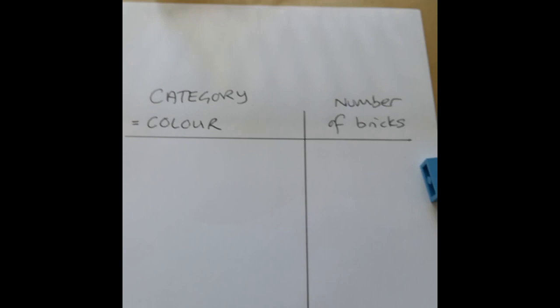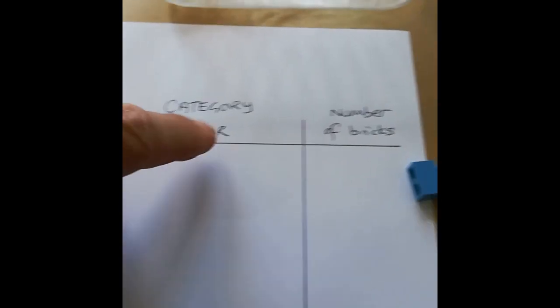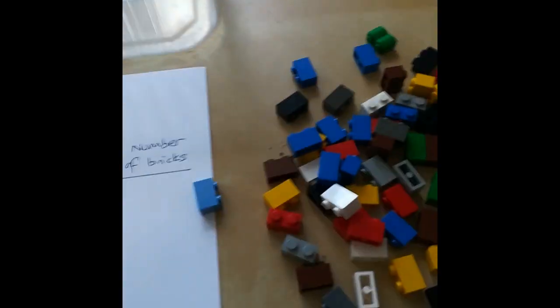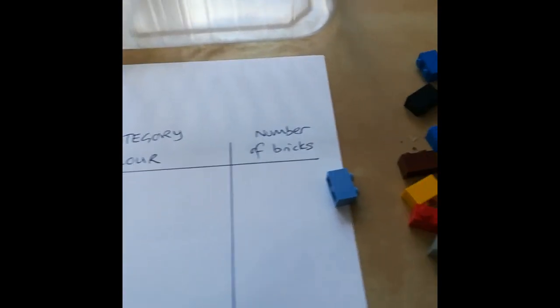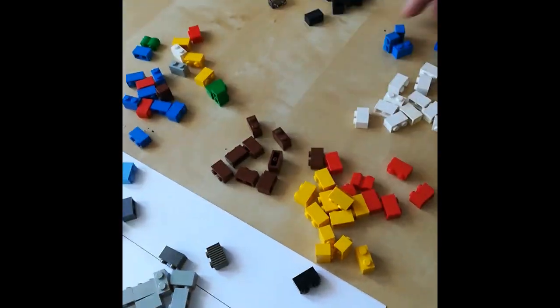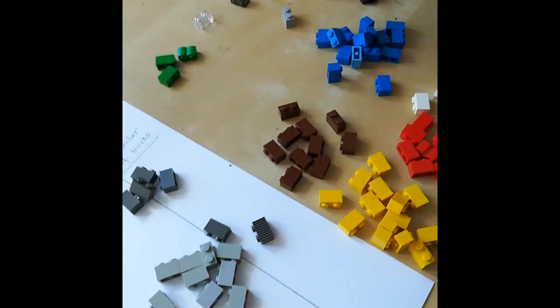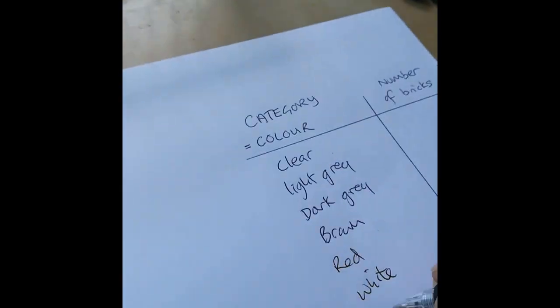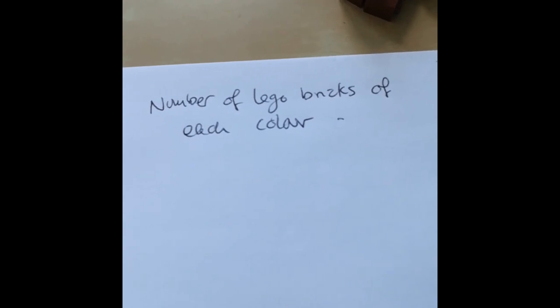First thing I need is a table. The category is the colour of brick, and the variation I'm looking at is the number of different bricks. I'm going to use a bar graph showing the number of Lego bricks of each colour, with the number of bricks on my y-axis and the colour on the x-axis.